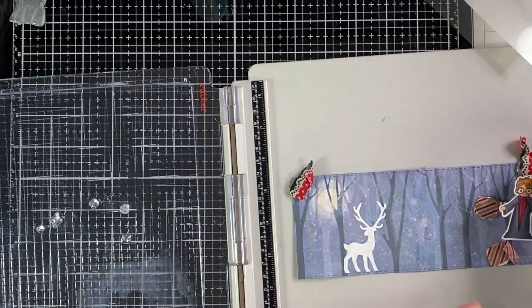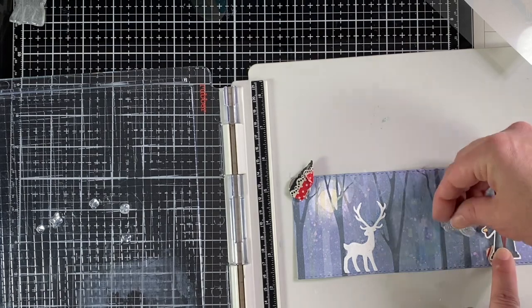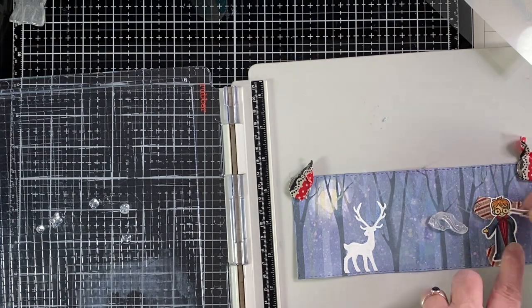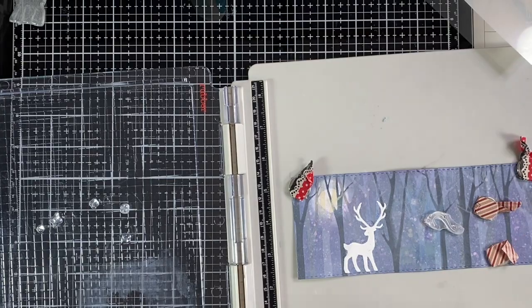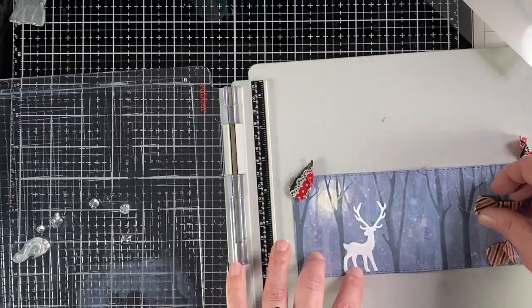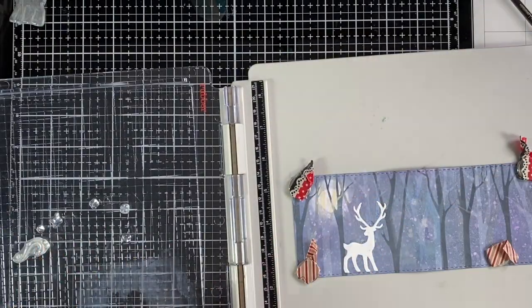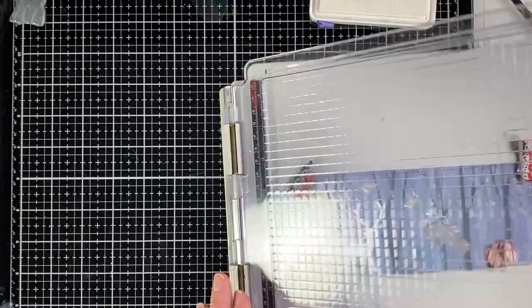So I went ahead and I used Versamark and I put it right back onto the stamp platform where I had it and I stamped it again. Then I put white embossing powder on at that time and that made it stand out a lot more. Then I used Trinity's shine brighter laser cut two-piece layering stencil set.